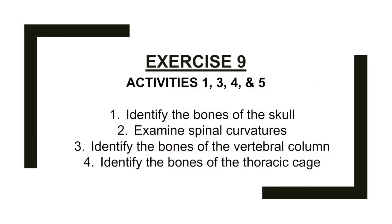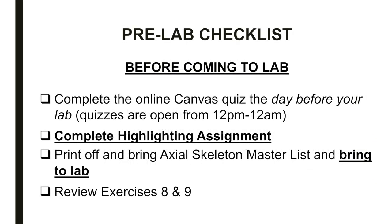Although we didn't dive into detail during pre-lab, we'll be spending most of lab this week identifying the specific bones and bone markings of the skull, vertebral column, and thoracic cage. Before you come to lab this week, complete the online Canvas quiz, complete the bone highlighting assignment, print off the axial skeleton master list, and review exercises eight and nine. If you have any questions or concerns, please reach out to your lab instructor.